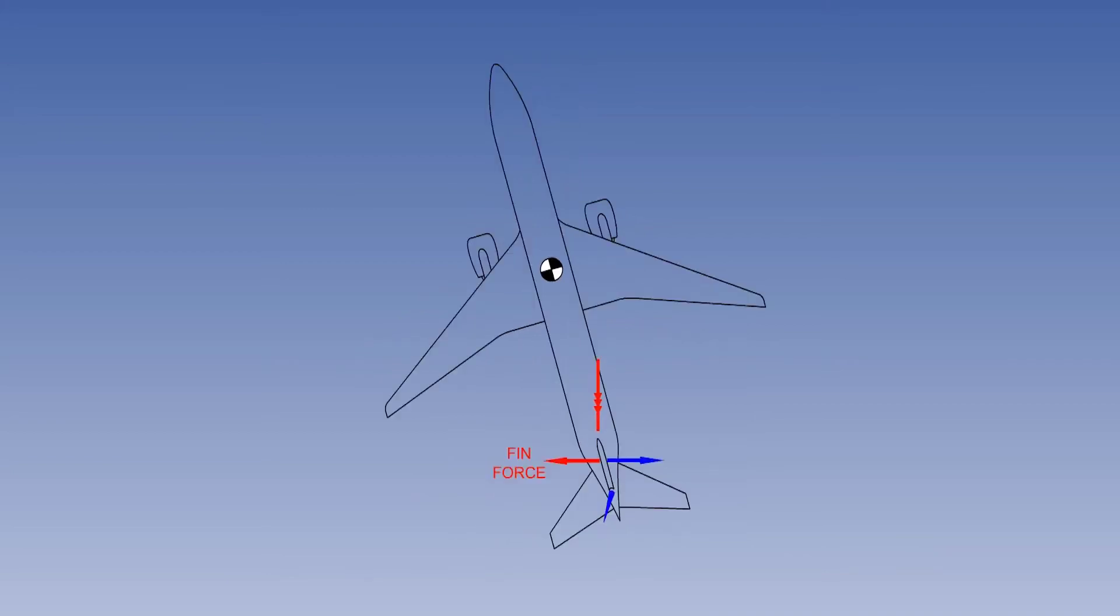You have seen that to hold a constant sideslip angle, the rudder must remain displaced from neutral. Therefore, like the elevator, the rudder is a displacement control.